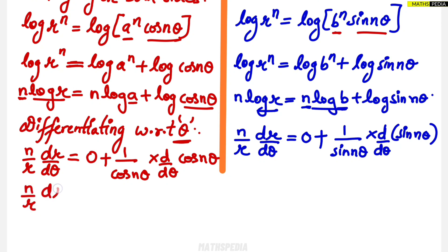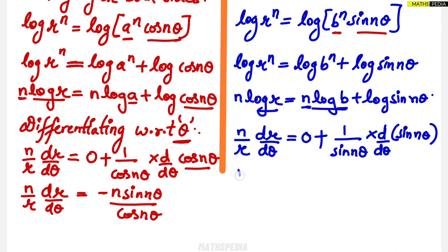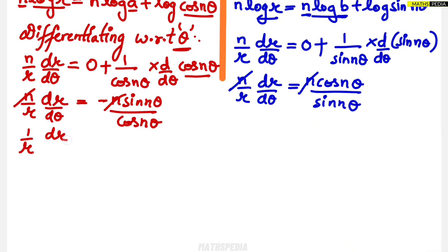For the first equation: (n/r)(dr/dθ) = [1/cos(nθ)] × (−n sin(nθ)), because the derivative of cos(nθ) is −sin(nθ) times n. For the second equation: (n/r)(dr/dθ) = [1/sin(nθ)] × (n cos(nθ)), because the derivative of sin(nθ) is cos(nθ) times n. Simplifying: in both equations n cancels, leaving (1/r)(dr/dθ) = −sin(nθ)/cos(nθ) and (1/r)(dr/dθ) = cos(nθ)/sin(nθ).